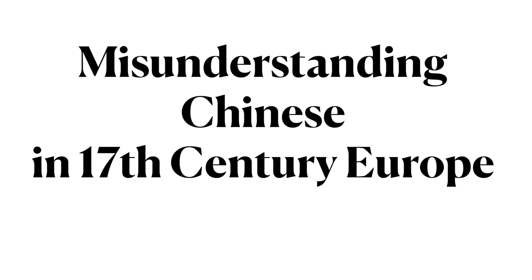We are going to look at a fundamental misunderstanding of the Chinese writing system by intellectuals in 17th century Europe. We are covering this topic to prepare us for one of the big takeaway messages from Chapter 2 of the textbook — that is, all symbol systems depend on convention for meaning. The intellectuals of 17th century Europe failed to grasp this concept when they misunderstood the Chinese writing system in three key ways.